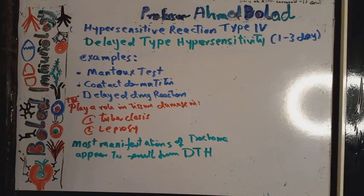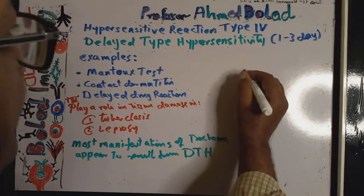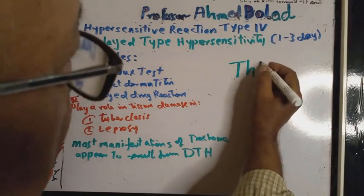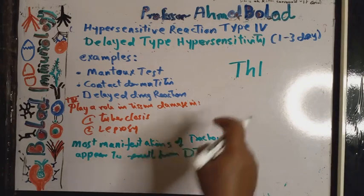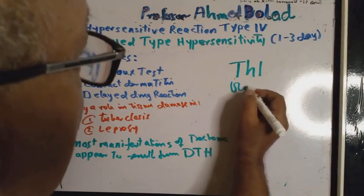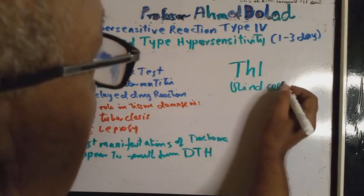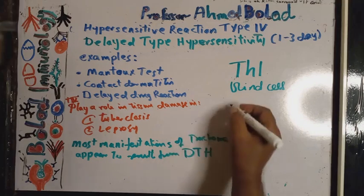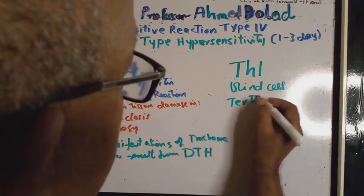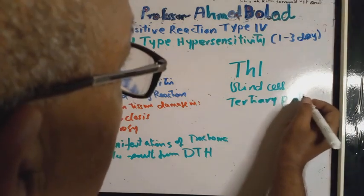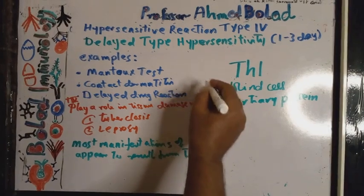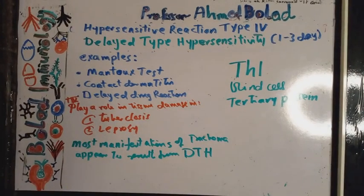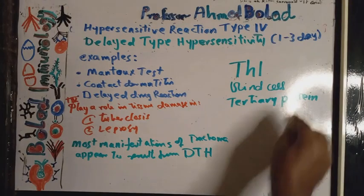The effector cell in this reaction is T Helper number 1. As you know, T Helper number 1 is a cell that does not have the capacity to see tertiary proteins.